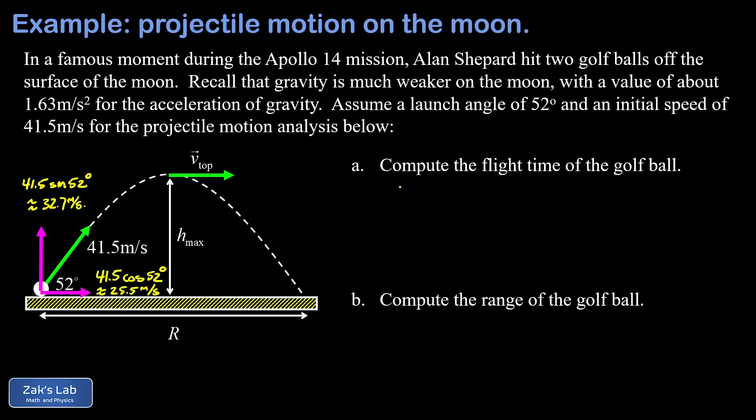Now we want to get the flight time of the golf ball. This is going to require an analysis of the y component of the motion. In fact, we know the final y coordinate of the ball, because we're on a level surface here, the final y coordinate is zero. We have that extra bit of information in the y direction, which is a big clue that we need to do a y analysis here.